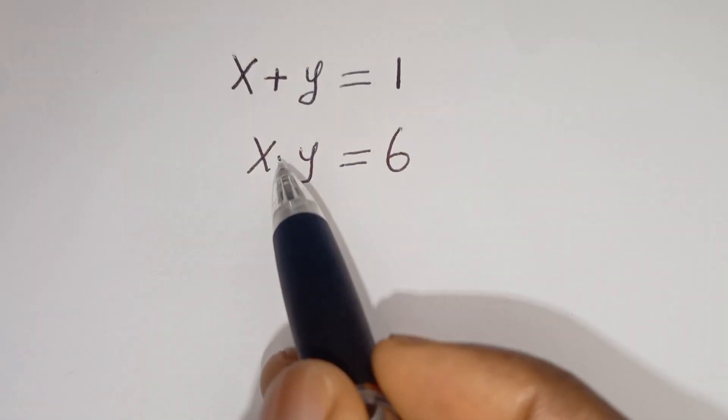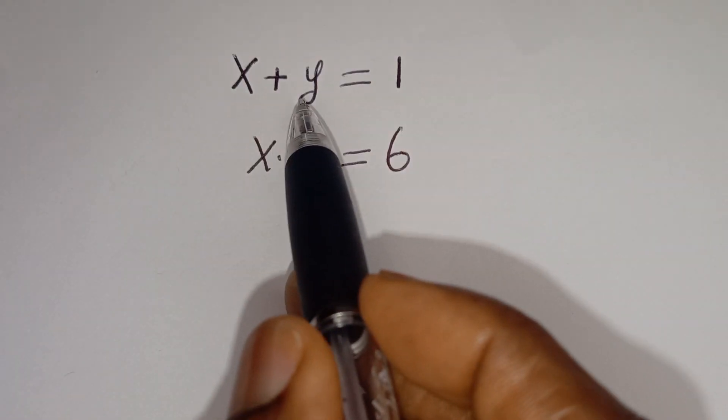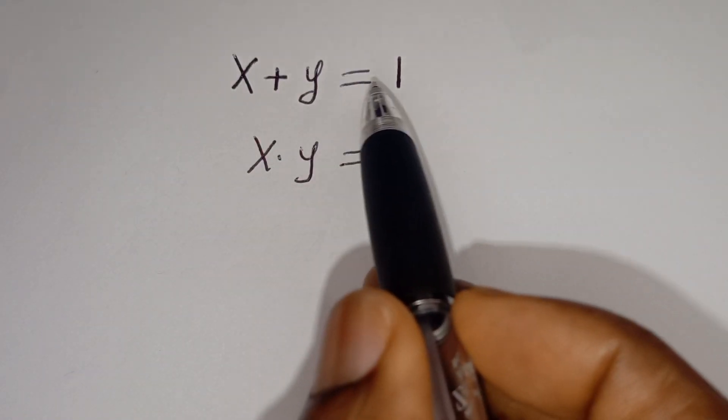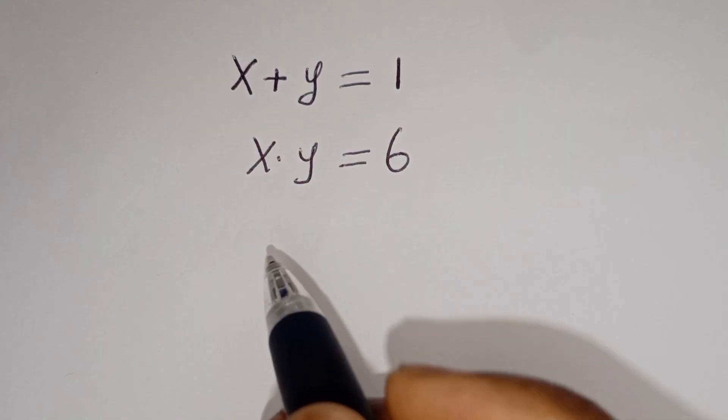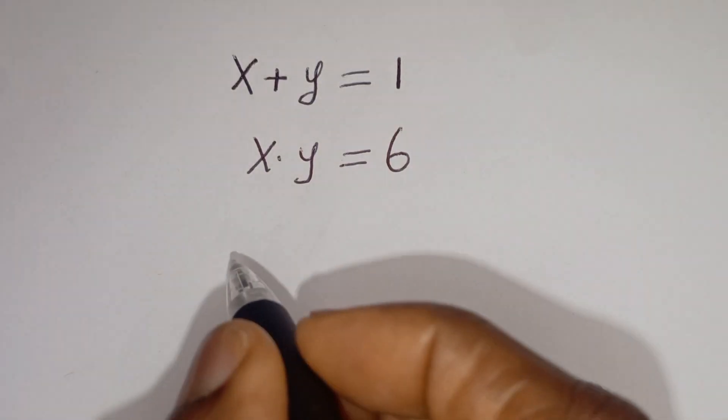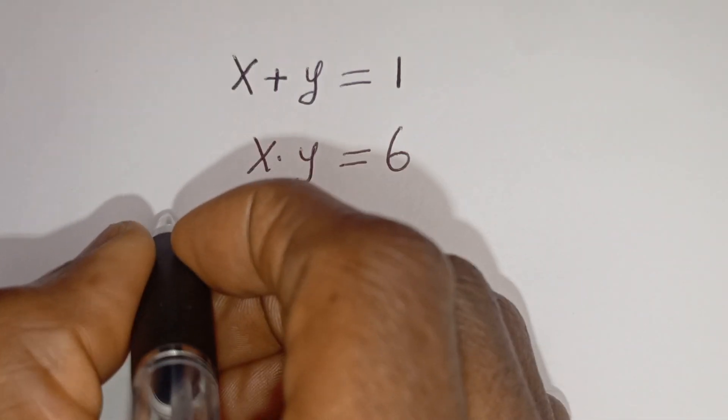Hello. How to solve for x and y in this equation: x plus y is equal to 1, and xy is equal to 6. Solution.